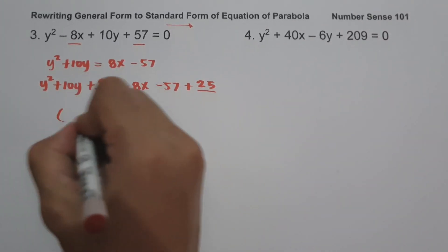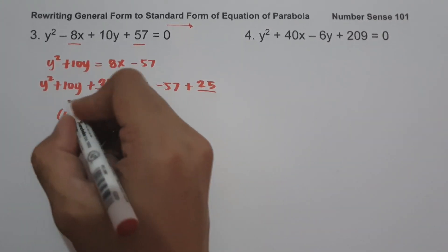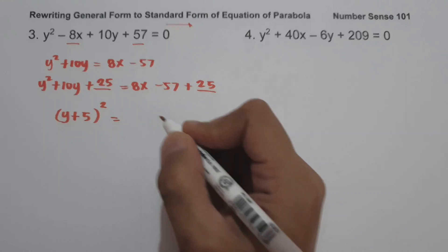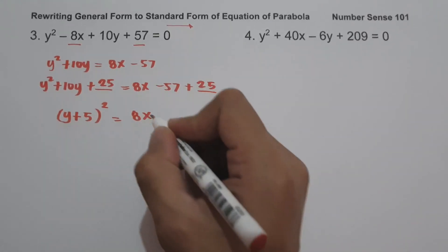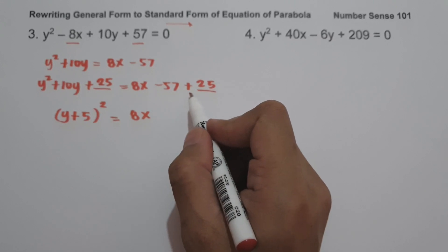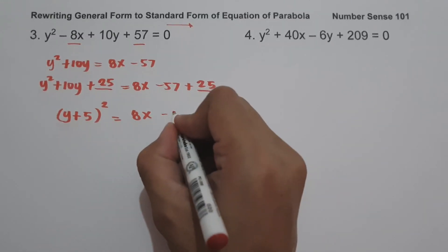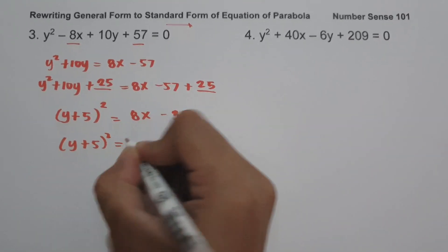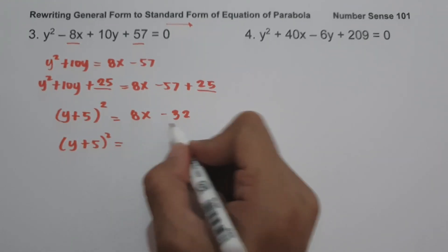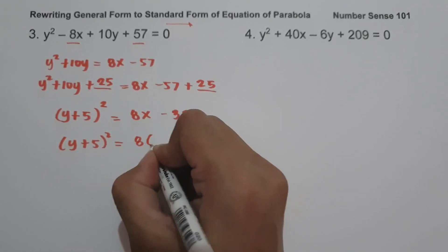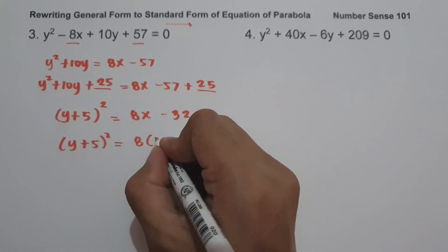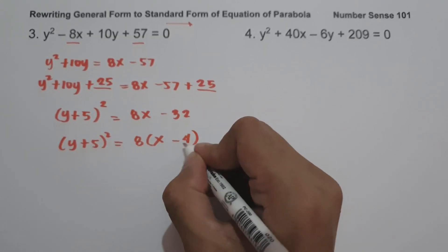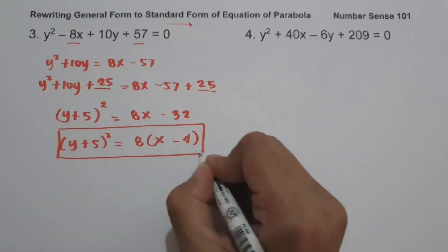Factoring: square root of y² is y, sign of the middle term is positive, square root of 25 is 5, giving (y + 5)². Then we have 8x and -57 + 25 = -32. Rewriting (y + 5)², the greatest common factor between 8x and -32 is 8. Dividing: 8x ÷ 8 = x, and -32 ÷ 8 = -4. This is the standard form of the equation of a parabola.